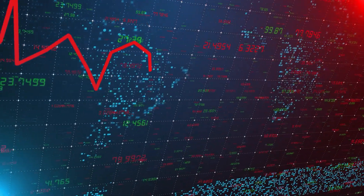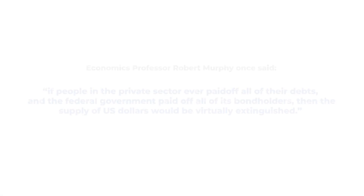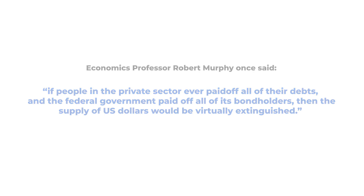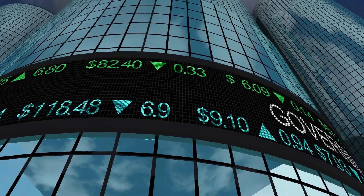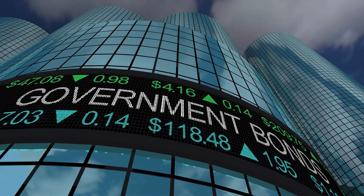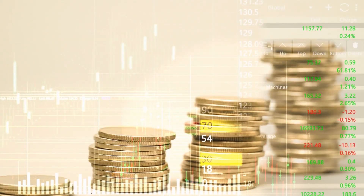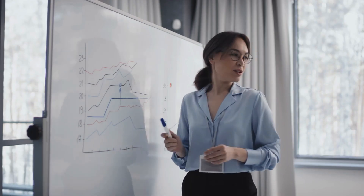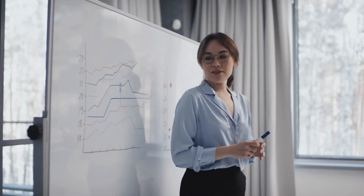Without further borrowing, the repayment of debt would result in strong monetary deflation. Economics professor Robert Murphy once said: 'If people in the private sector ever paid off all of their debts, and the federal government paid off all of its bondholders, then the supply of US dollars would be virtually extinguished.' Despite this, money is not the same as debt — perceiving money as debt is a popular misconception. Inflationary policy not only reduces the purchasing power of money but also leads to clusters of malinvestments. For this reason, many Austrian economists oppose this kind of monetary policy and even consider the very existence of central banks as detrimental to both society and the economy.